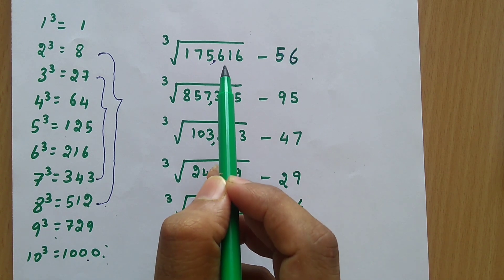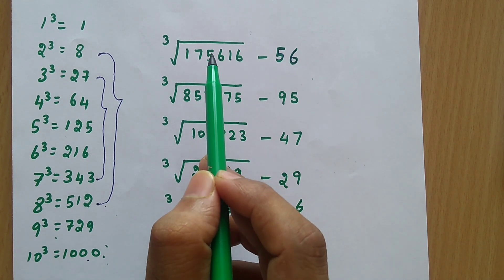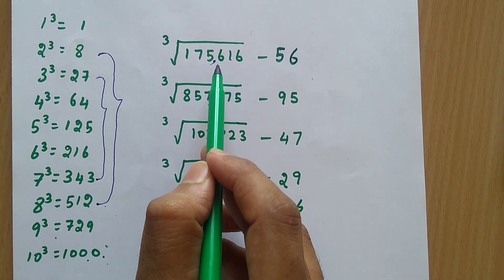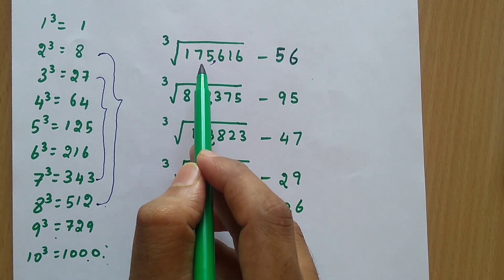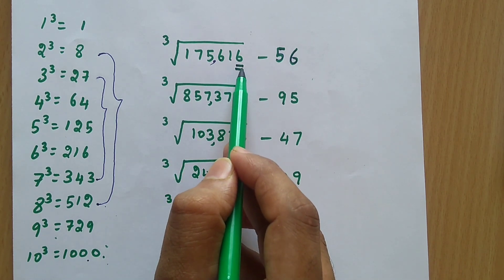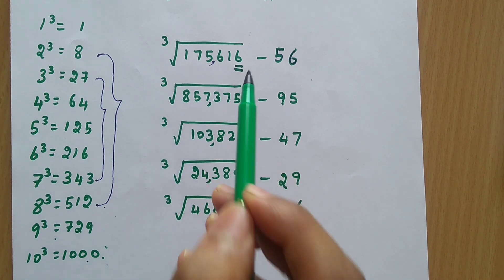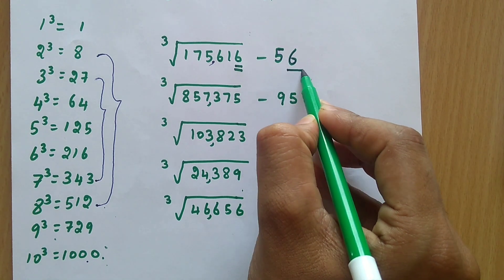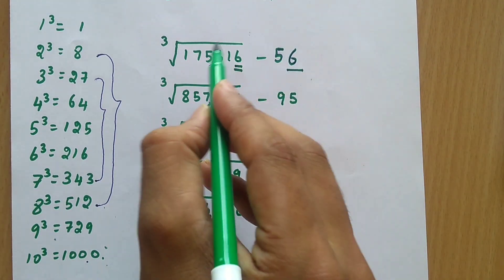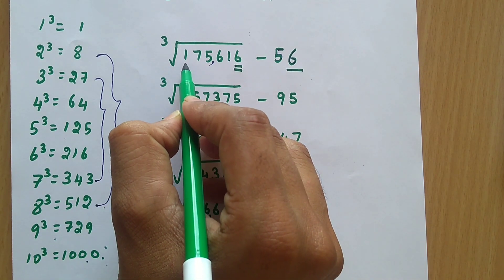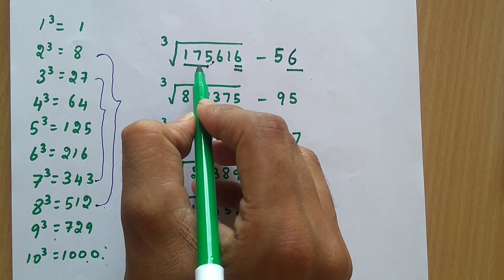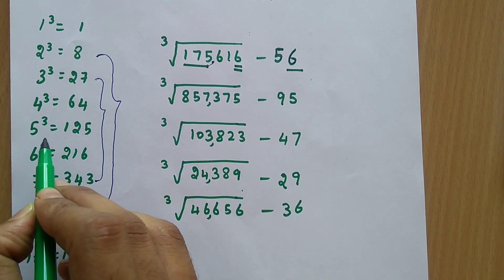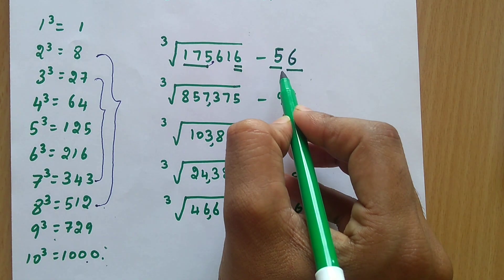In square root we divide the digits from last into groups of 2. But here for cube root with a 6-digit number, from the last you divide the digits into 3 digits, and in front it is also 3 digits. So here the last digit is 6 — if the last digit is 6, you write the same number as the unit digit. So the unit digit is 6. To find the tens digit, you look at the perfect cube below 175. The perfect cube below 175 is 125, and the corresponding cube root is 5. So the tens digit is 5.